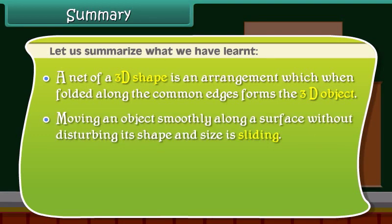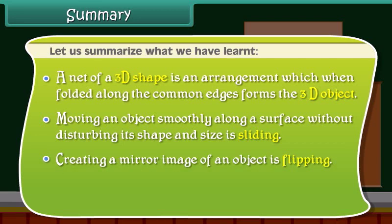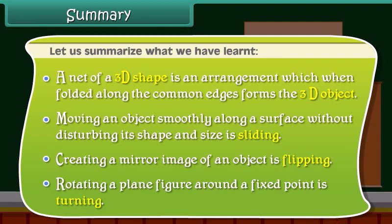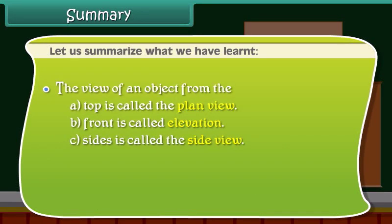Moving an object smoothly along a surface without disturbing its shape and size is sliding. Creating a mirror image of an object is flipping. Rotating a plane figure around a fixed point is turning. The view of an object from the top is called the plan view; from the front is called elevation; and from the side is called the side view.